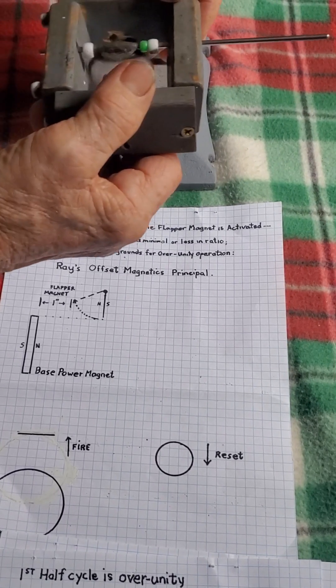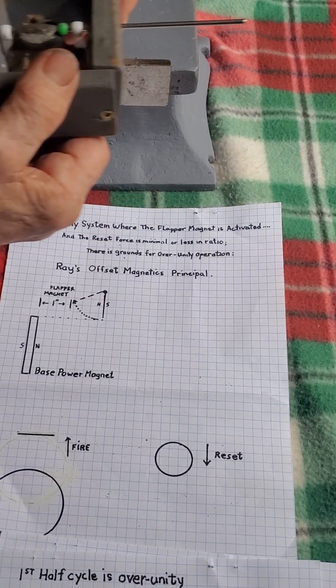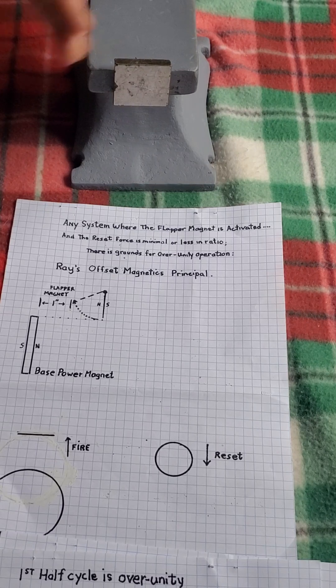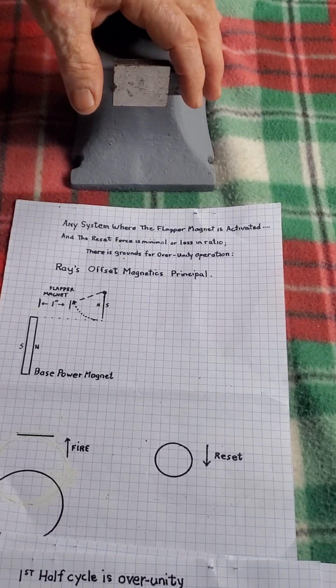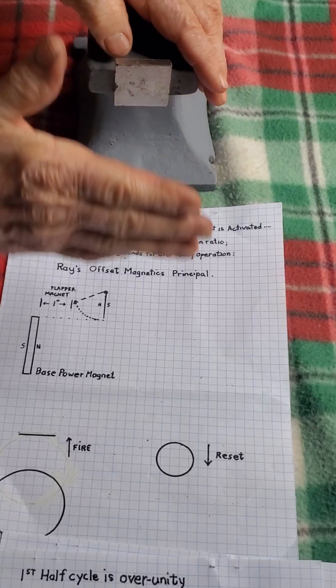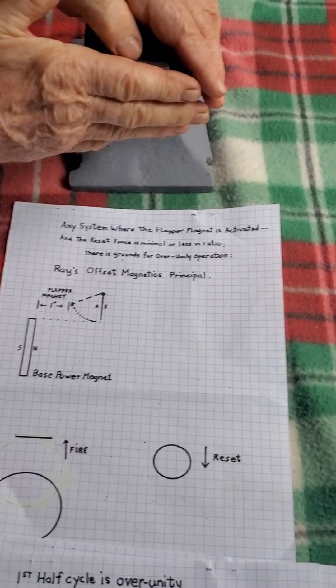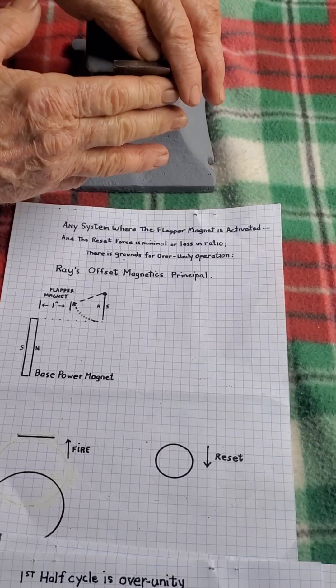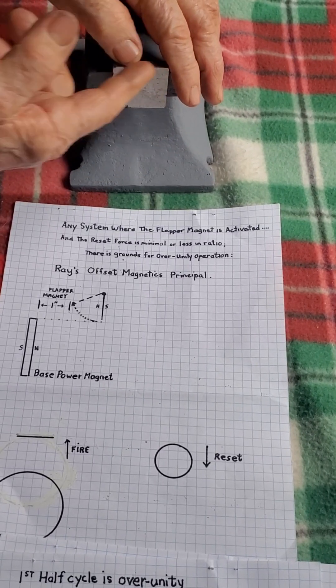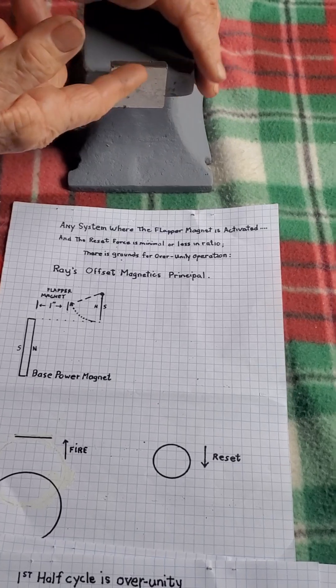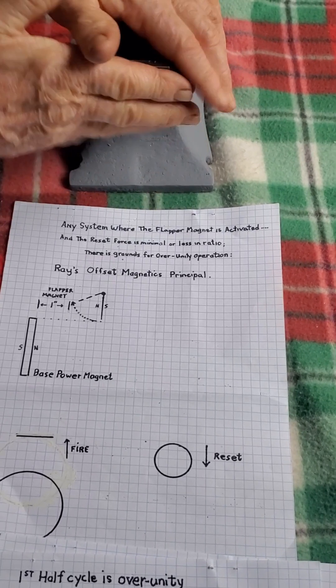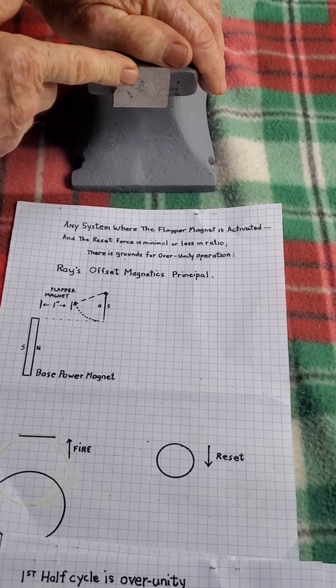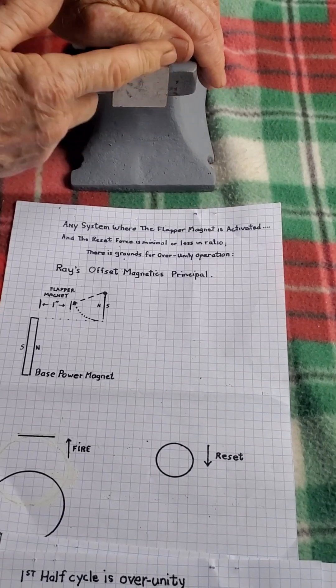This is a very nice design. The principle behind it is offsetting the magnets. If you have the magnet right there, it's going to lock in. But we're using one of the principles I've covered: second story magnetics in a sense, and also offsetting. There's no direct interaction. There's a secondary offset reaction. That's where the over-unity is coming from.